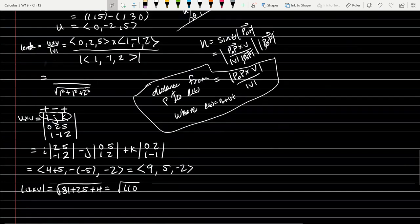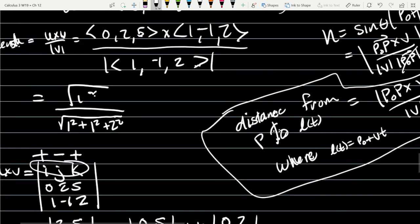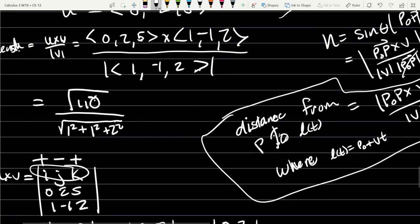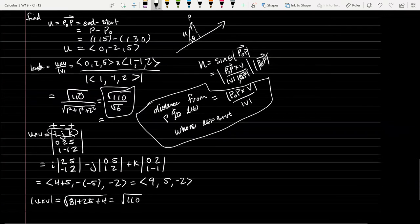We're ready to find the length. The magnitude of (9,5,-2) is square root of 81+25+4, that's square root of 110 over square root of 6. We can't combine the square roots. 110 is 5×2×11. Square root of 110 over square root of 6. That's as good as it gets. That's our first length right there.